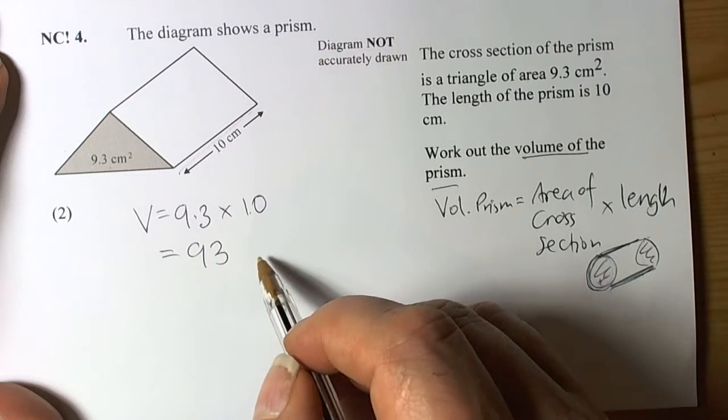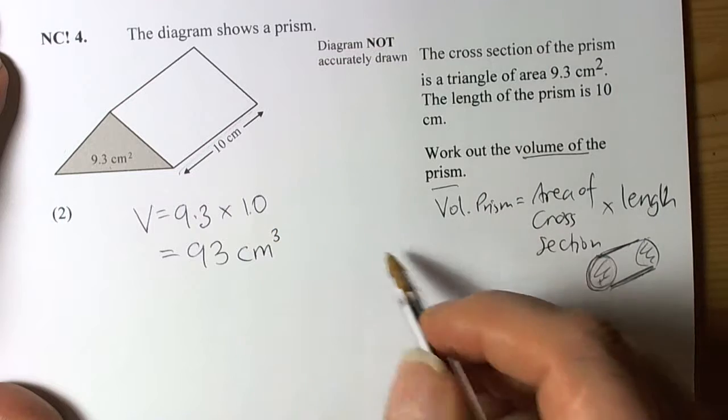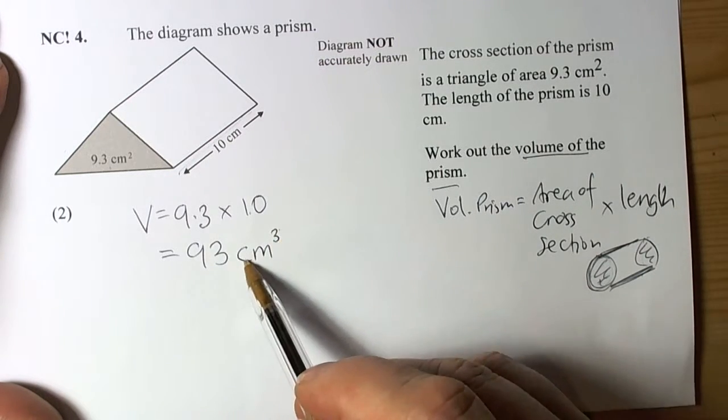So it becomes 93, and because it's volume, 3 dimensions, the units will be cubic units - power 3 units, 3 dimensions, cubic units.